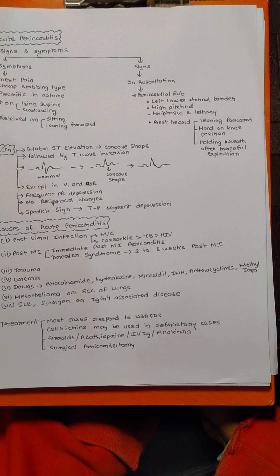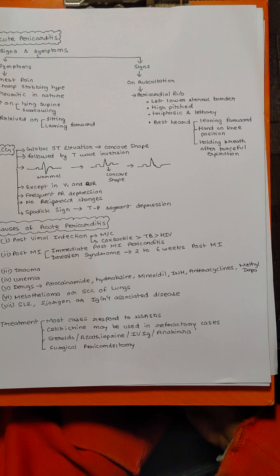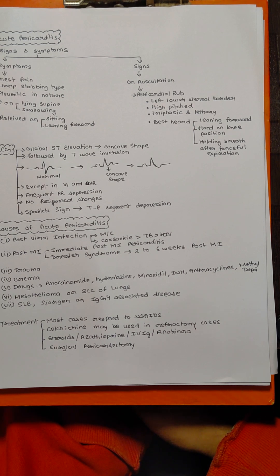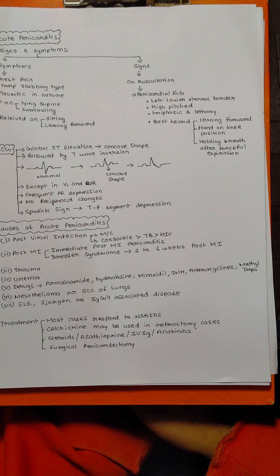There are a few tumors that can cause acute pericarditis: mesothelioma, squamous cell carcinoma of lungs. A few autoimmune diseases also cause acute pericarditis—the major among them is SLE, Sjögren's, and most importantly IgG4-associated diseases.